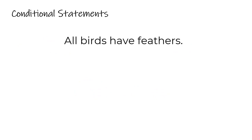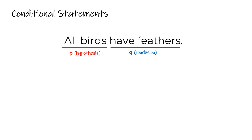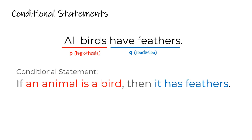We might also have to take a single statement and write a conditional statement from it. A statement like 'all birds have feathers' does have a hypothesis and a conclusion — we're assuming this pertains to all birds, no matter what kind, and the conclusion is that it has feathers if it's a bird. So we want to write that as a conditional statement in if-then format. Notice we can't just say 'if all birds then have feathers' — that doesn't make sense. We have to change the wording so it makes sense to the reader. So we might write: if an animal is a bird, then it has feathers. It still means the exact same thing, and then we'd determine whether it's true or false.